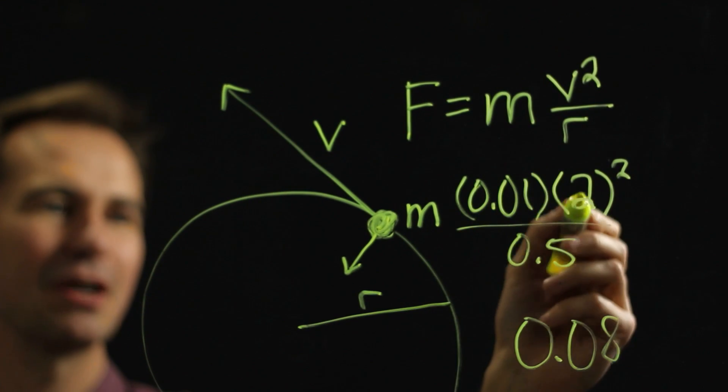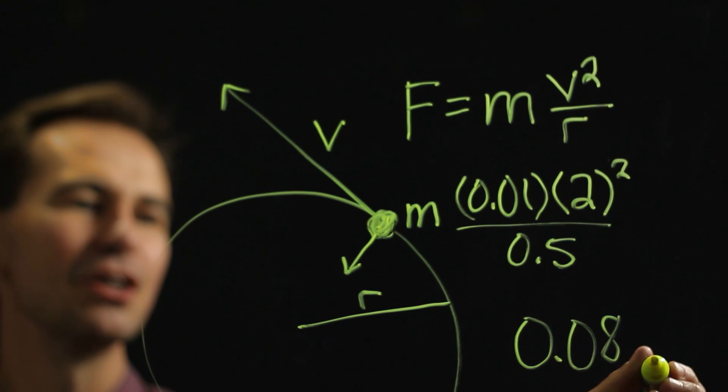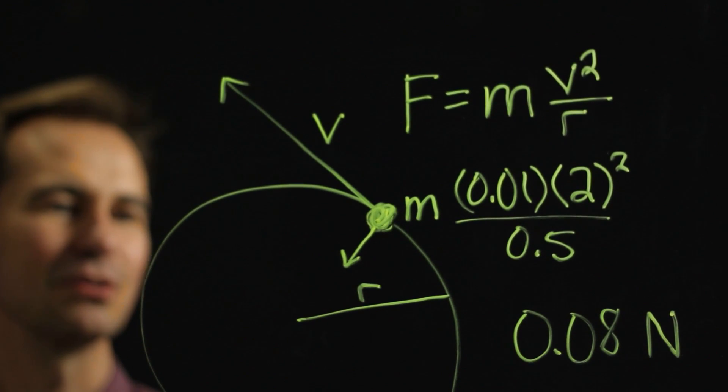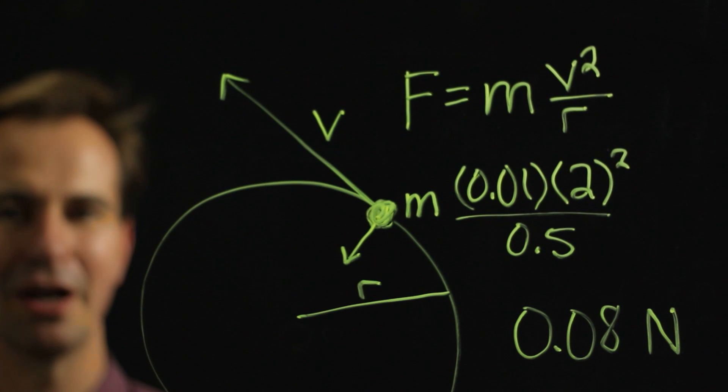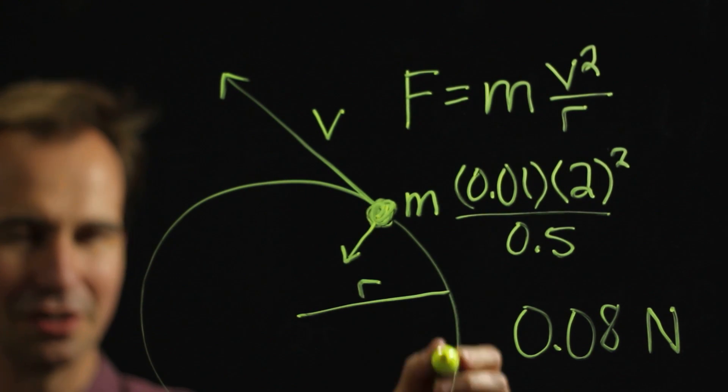And with this in kilograms, meters per second and meters, the units of this would be newtons. So there's the centripetal force required to make this object go in this particular circle.